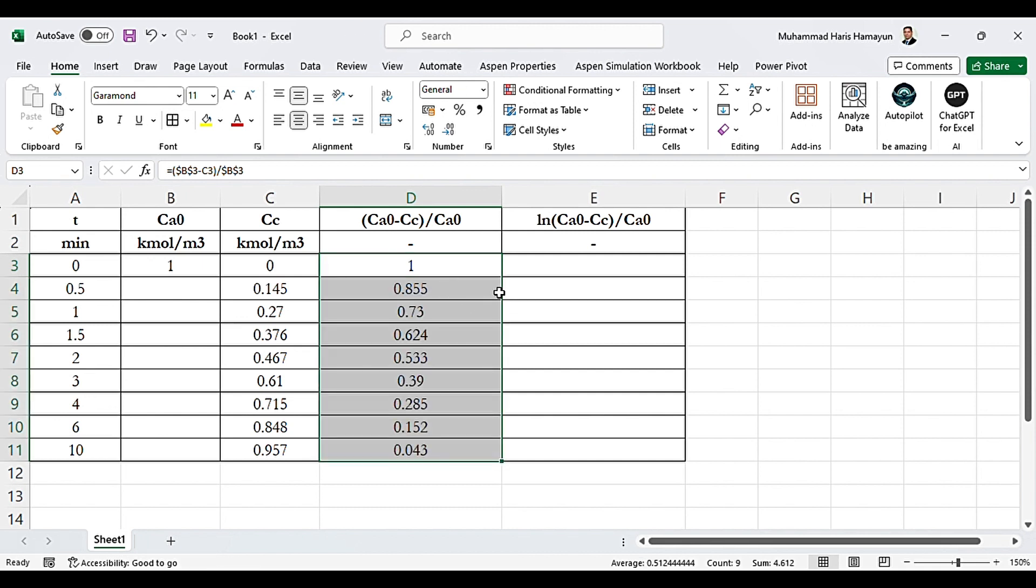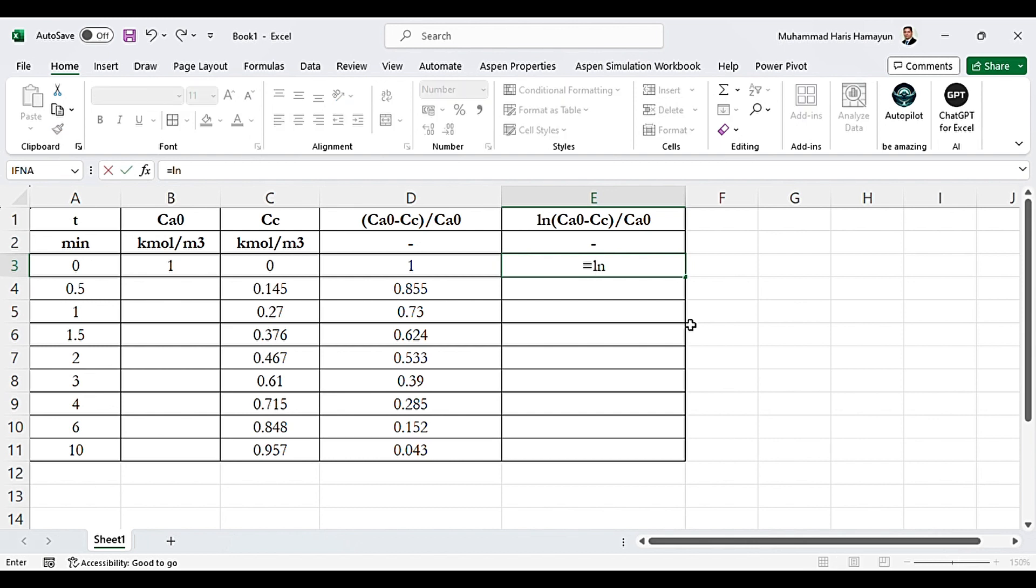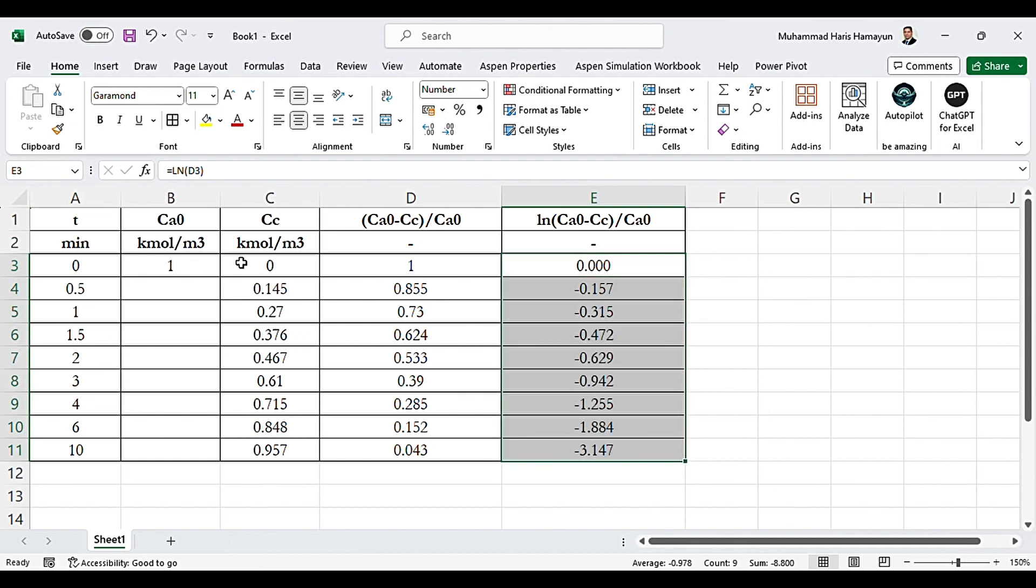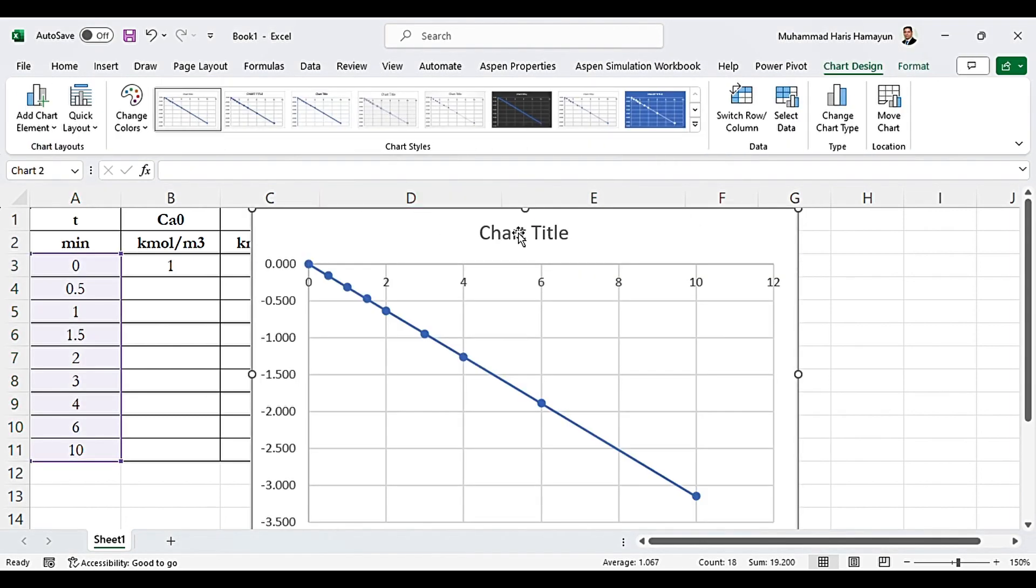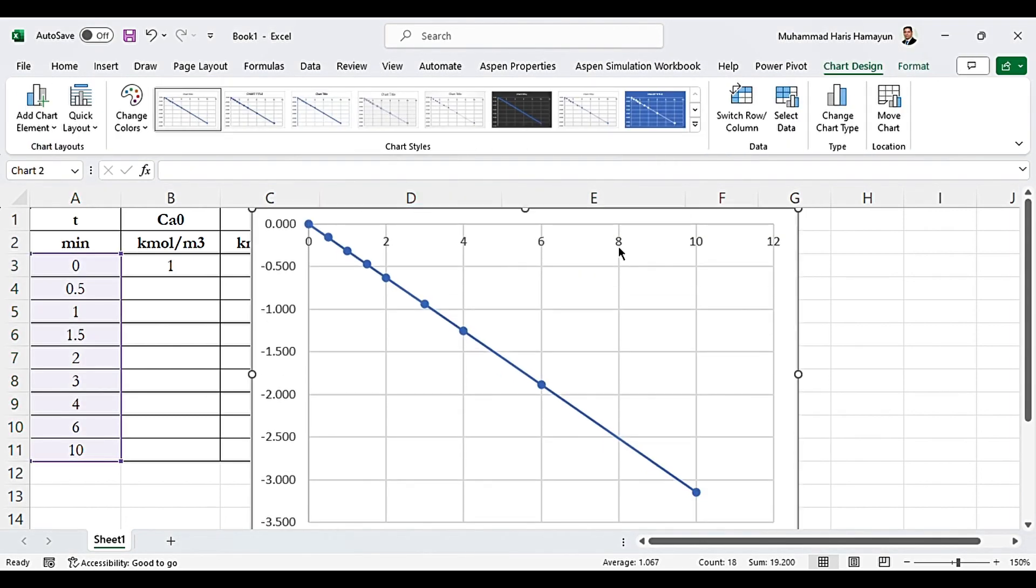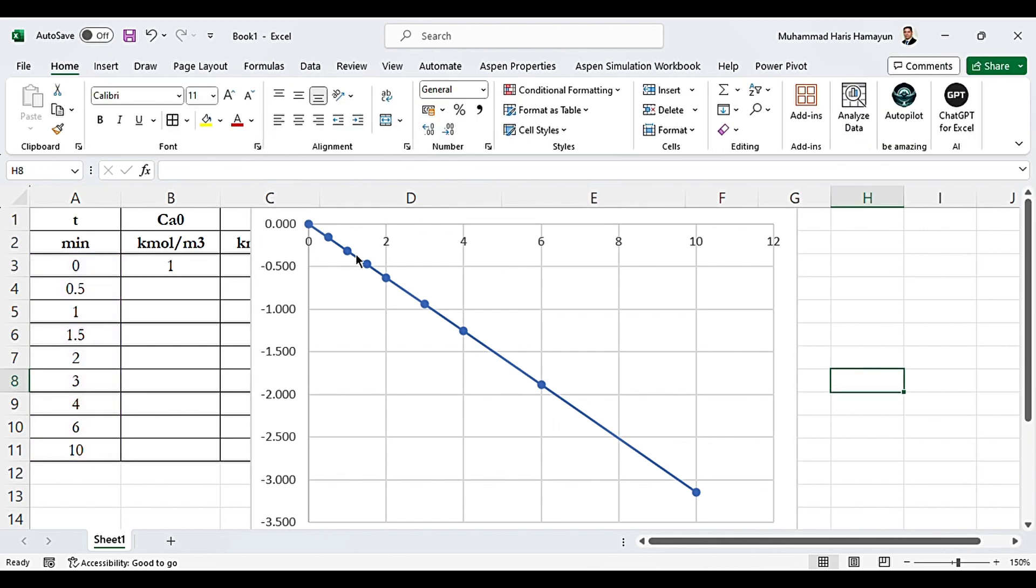And now simply drag it. And you can see you got the values. Now you have to take the natural log of it. And simply drag it. Now you have to draw the plot between time and natural log of C0 minus C of C over C0. And what we need to do. We need to simply go to this insert and draw the plot over here.